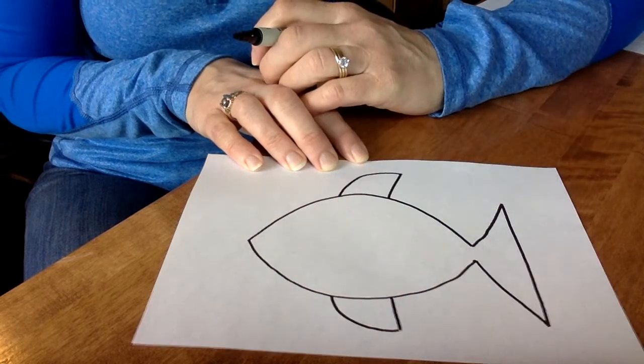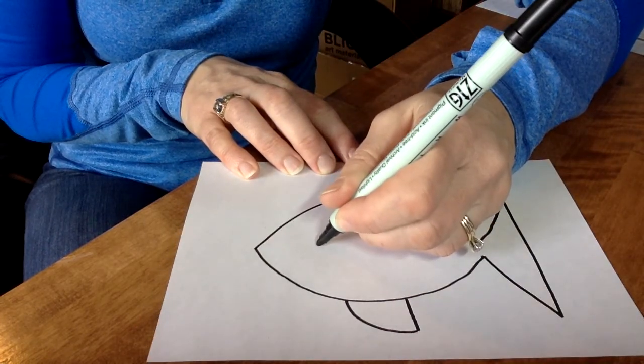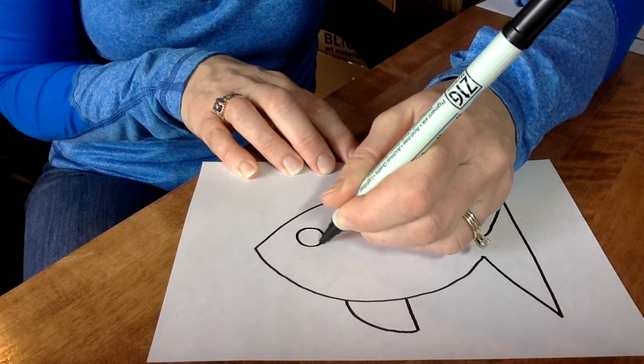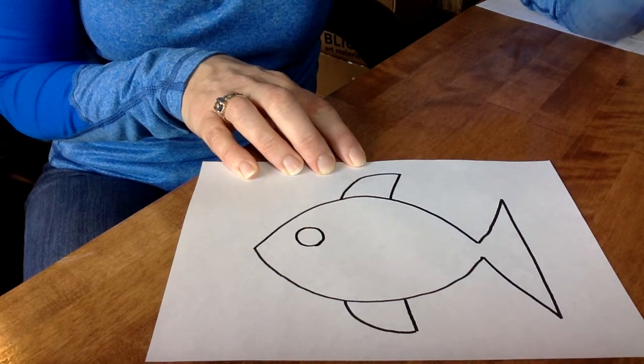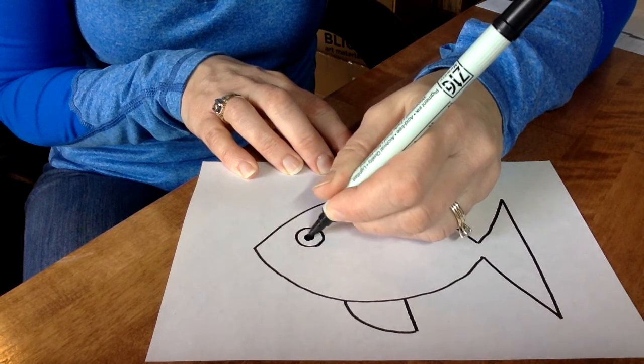Now I'm going to think about the face. Really simple. I think I'll do a great big circle eye. Do you see how much we're using our shapes to draw this fish? I want to put in a pupil for the eye.